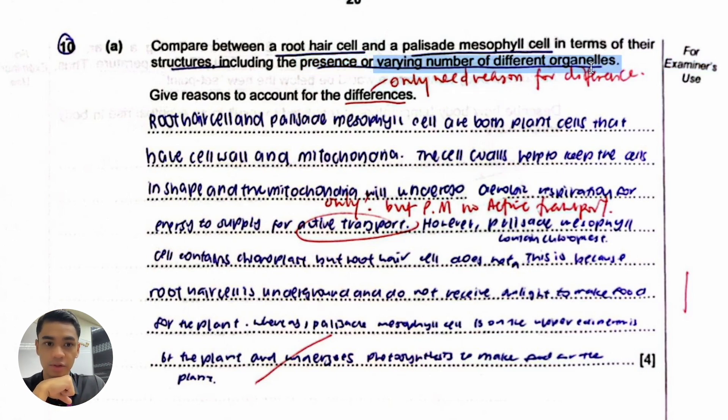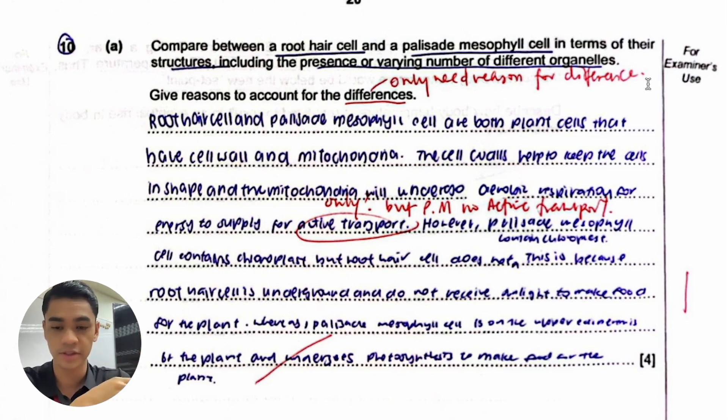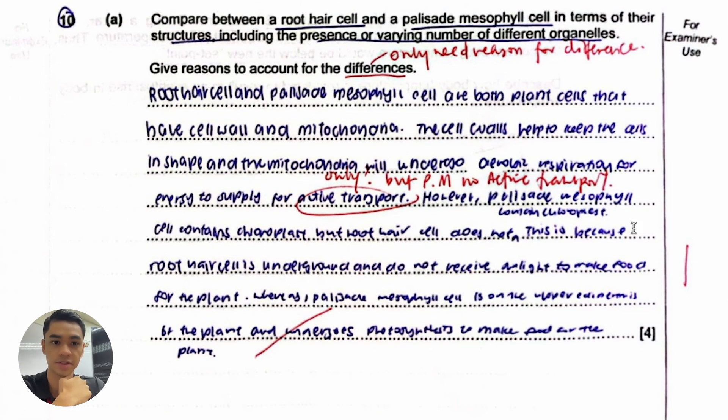Then varying number of organelles. So root hair cell will have more mitochondria because it needs to release a lot of energy through aerobic respiration for active transport of mineral salts against the concentration gradient from the soil into the cell sap. That's why it will have more mitochondria. But the palisade mesophyll do not need to do that so they will have less mitochondria. They won't have no mitochondria because they need for aerobic respiration, but they will have less. They don't have this extra job that they need to do of actively transporting mineral salts.